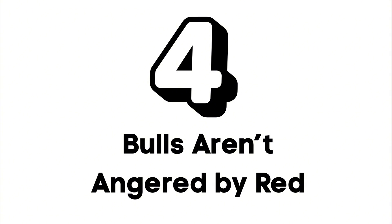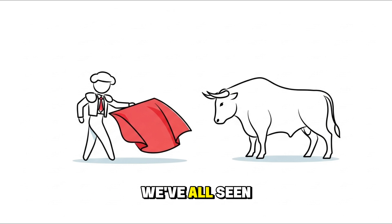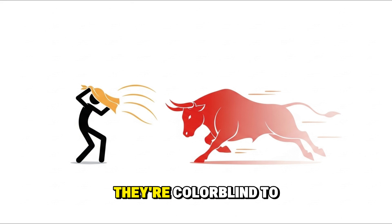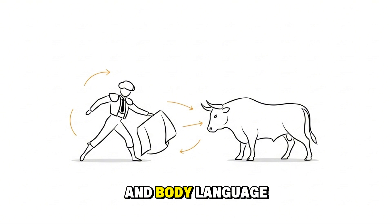Number four: Bulls aren't angered by red. We've all seen matadors waving bright red capes, and we've been told bulls charge because they hate red. Except bulls can't even see red. They're colorblind to red and green. What triggers them is motion, not hue. The matador's movement and body language provoke the bull, not the fabric's color.